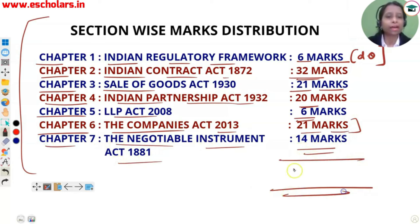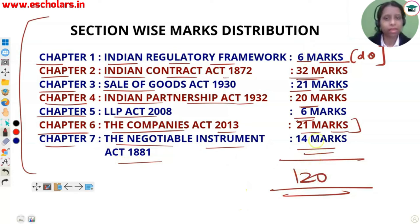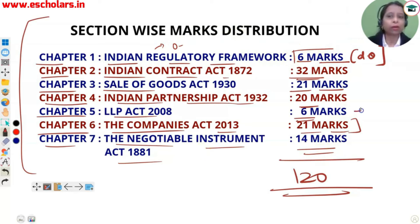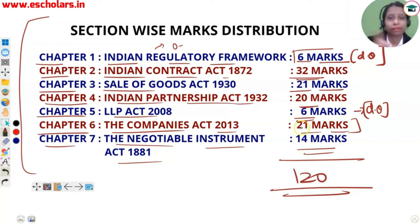So you have got so much clarity. This will be your distribution in 120 marks. It was written section-wise. There will be good direct questions of Indian Regulatory Framework. In LLP and Chapter 1, it will come to your direct questions only. The rest will come to your mixed questions — both direct and case study.